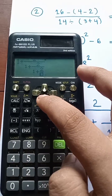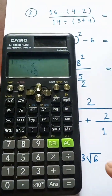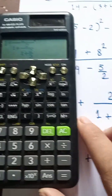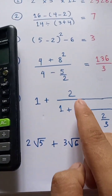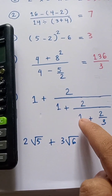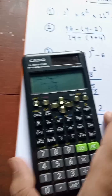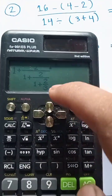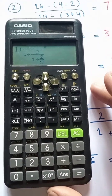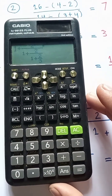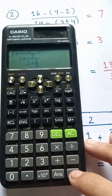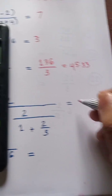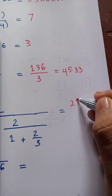One plus two over one plus two over one plus two over three — level up at the moment. One plus two over three, equally — that's 21 over 11.